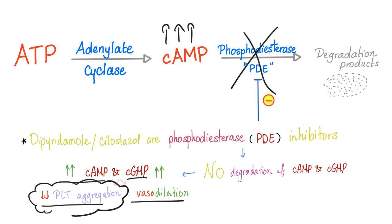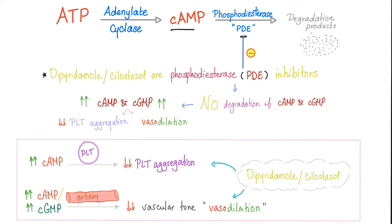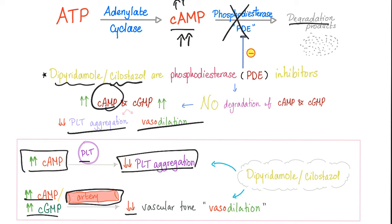Because they decrease platelet aggregation, dipyridamole and cilostazol are covered in the bleeding and coagulation disorders playlist. When you inhibit phosphodiesterase, nobody is degrading cyclic AMP, so it accumulates, leading to decreased platelet aggregation and increased vasodilation. When you increase cyclic AMP inside the platelet, this decreases platelet aggregation. When you increase cyclic AMP or GMP inside a blood vessel, this decreases vascular tone, resulting in vasodilation.